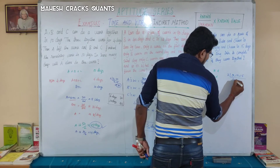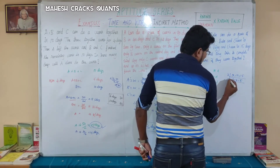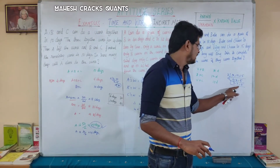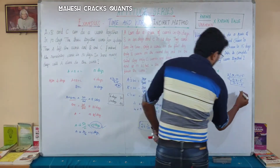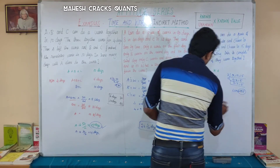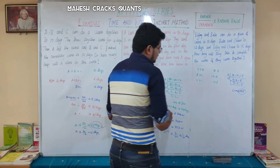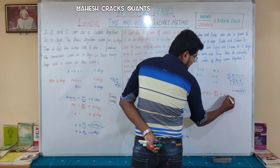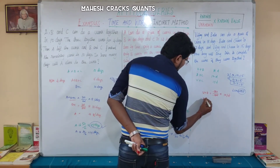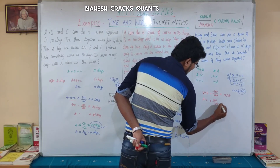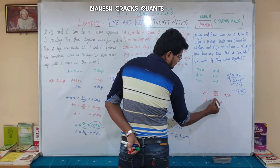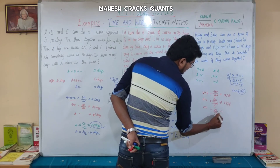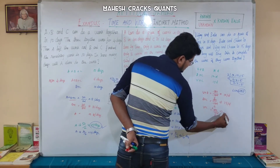Taking LCM of 18, 12, 15: 3 into 2 is 6, 6 into 3 is 18, 18 into 2 is 36, 36 into 5 is 180. So total work = 180. Vijay+Bala rate: 180 divided by 18 = 10 per day. Bala+Charan rate: 180 divided by 12 = 15 per day. Vijay+Charan rate: 180 divided by 15 = 12 per day.